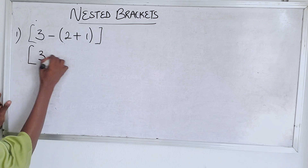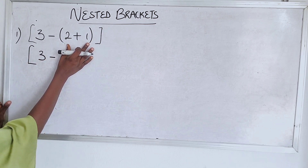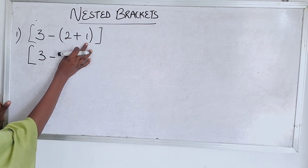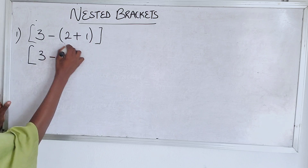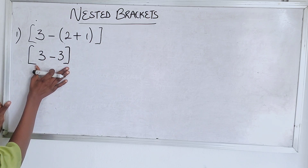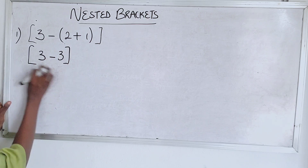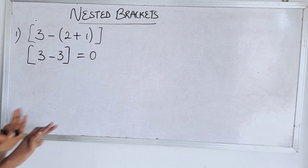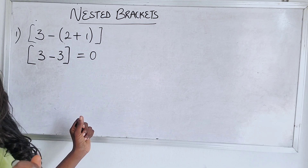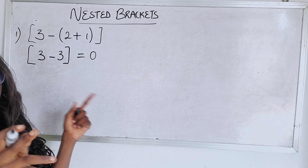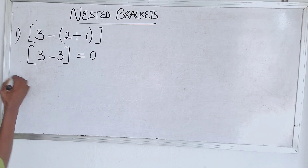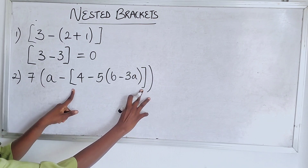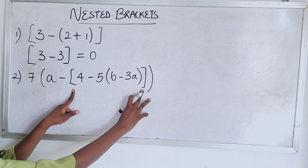You solve the inner bracket first. So two plus one is three. You're left with the outer bracket — three minus three is zero. Simple as ABC. Let's move to another question.